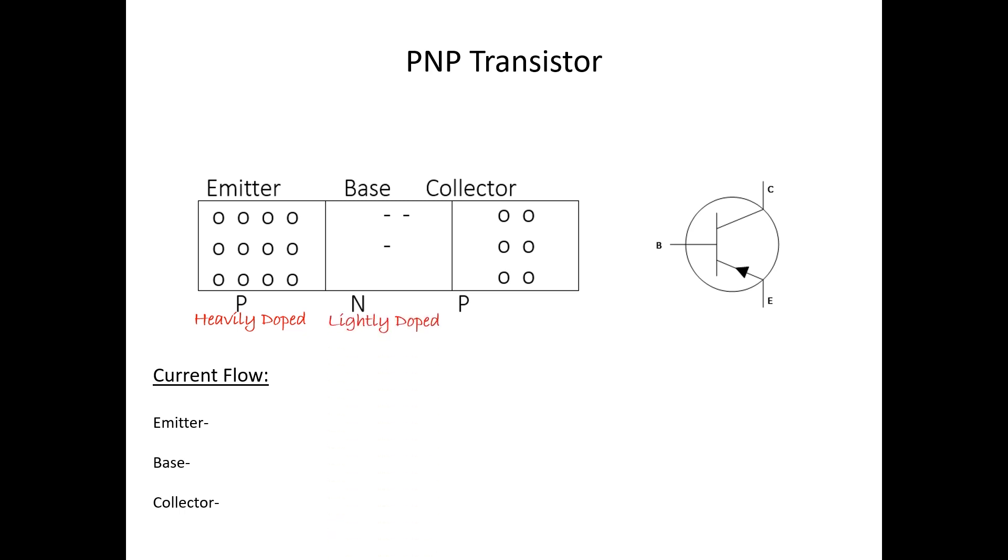The base, thin and lightly doped in N-type material, and the collector moderately doped in P-type material, or holes. Now it still has two requirements to turn it on, and they're the same.